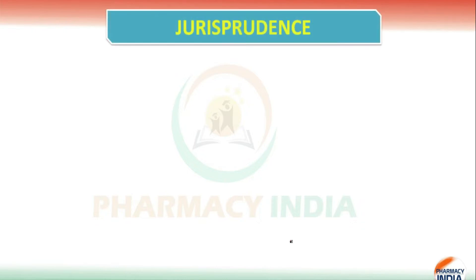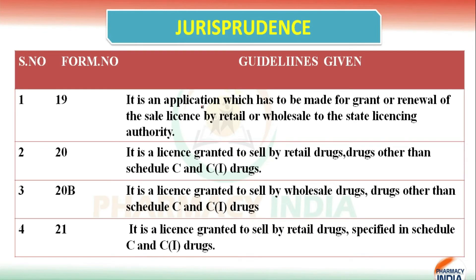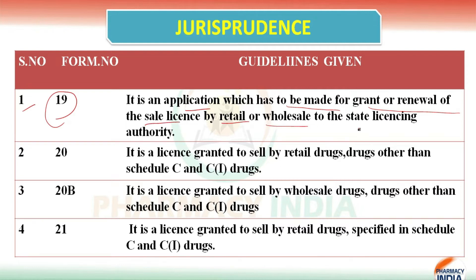We are going to discuss which form contains which type of guidelines. The first one is Form Number 19, and it contains an application which has to be made for grant or renewal of the sale license by retail or wholesale to the state licensing authority. It is about the sale license by retail or wholesale.